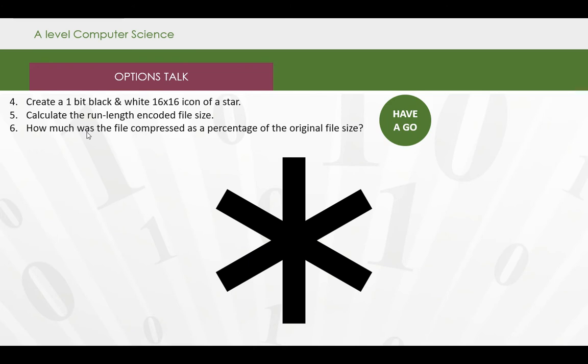Right, your next task. I've got on the screen for you a star icon. Using the grid that you've got in your worksheet, I would like you to try and create me the one bit representation of this star. Using, just as we were doing before, ones and zeros to represent the white space and the black space.